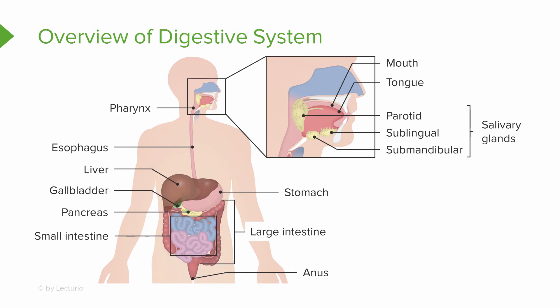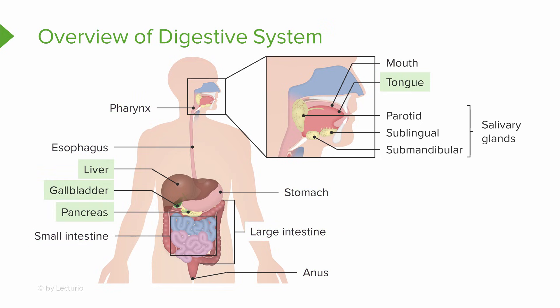Here we have a depiction of the digestive organs in the digestive system. Again, starting at the beginning, we have the mouth, followed by the pharynx, the esophagus, which leads into the stomach, the small intestine, large intestine, the rectum, and then out through the anus. Also, we have our accessory structures, including the tongue, the teeth, the liver, the gallbladder, and the pancreas.